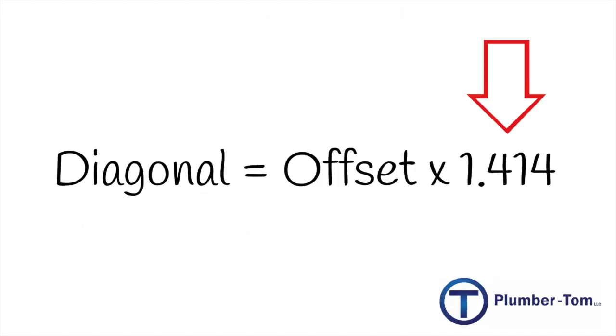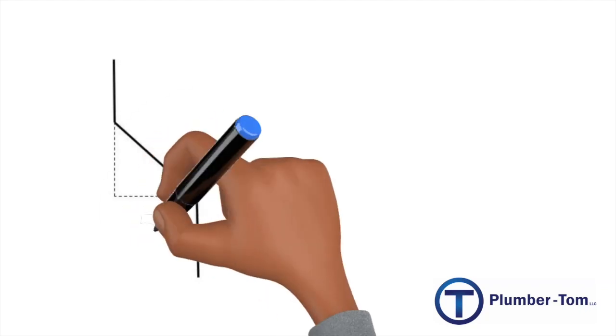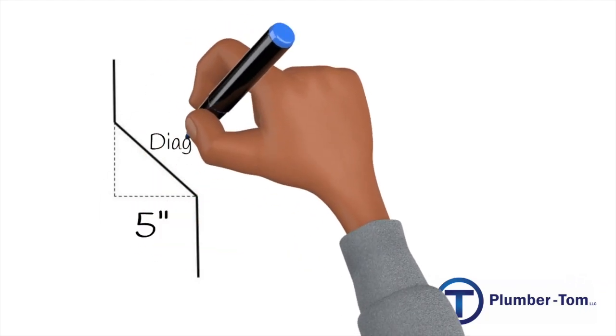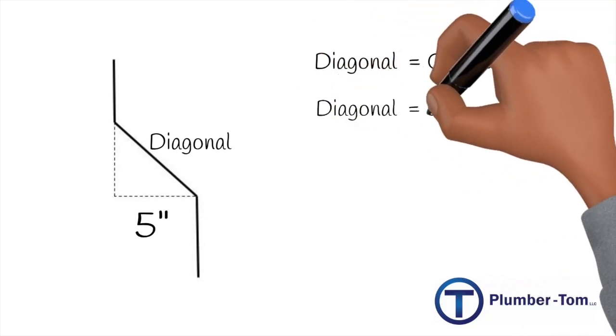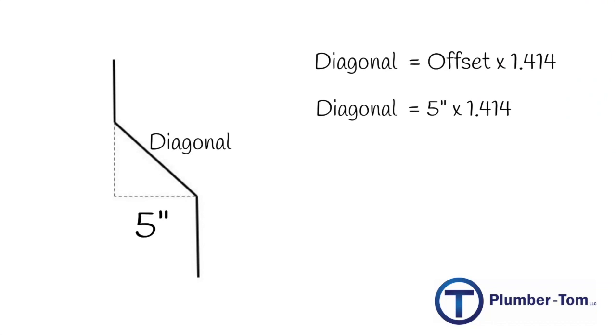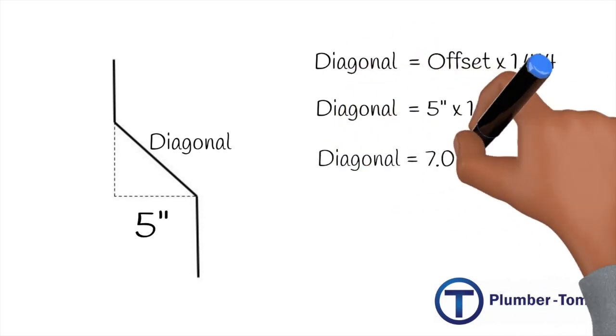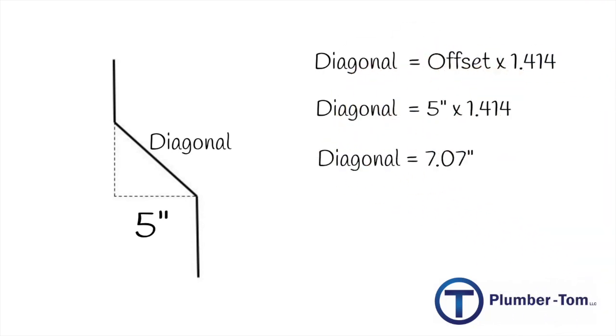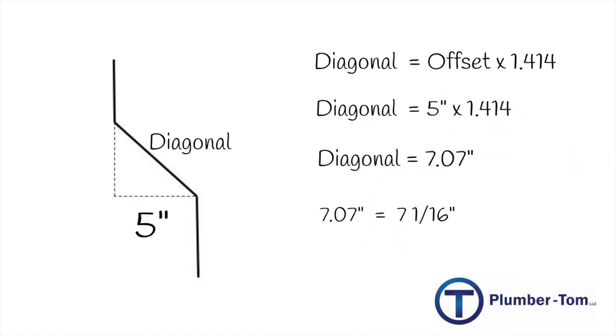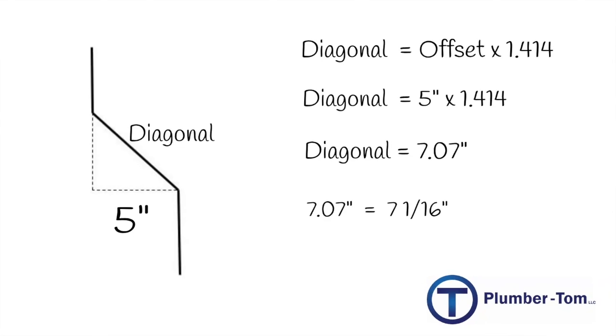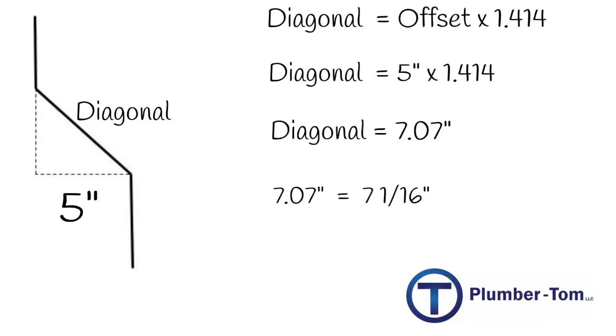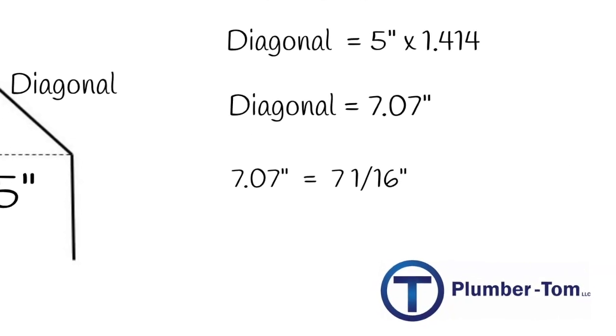Let's look at an example as we calculate for the offset. What if the offset is five inches, and we want to find the diagonal, which is where our pipe will run. We will take the offset, which is five times that by 1.414. And on a calculator, we will find 7.07. Now if we were to convert that into fractions of an inch, you will find that it is 7 and 1 sixteenth of an inch.